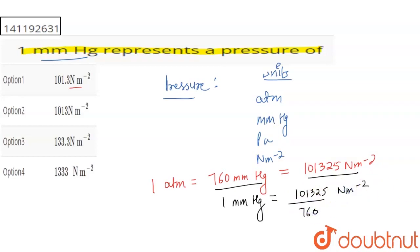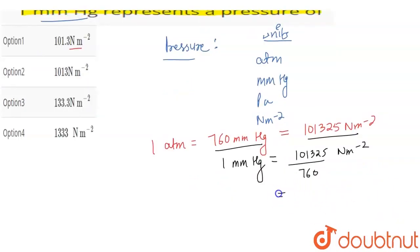Newton-meter minus 2, right? We have to solve it. You have to write it. 133.3 Newton-meter minus 2, right?